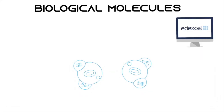We're going to be starting the AS biology course with the first topic about biological molecules. In this topic we're going to be learning about four types of molecules: water, carbohydrates, proteins, and lipids. For this lesson we'll only be focusing on water and carbohydrates. The next topic is going to be proteins and lipids.